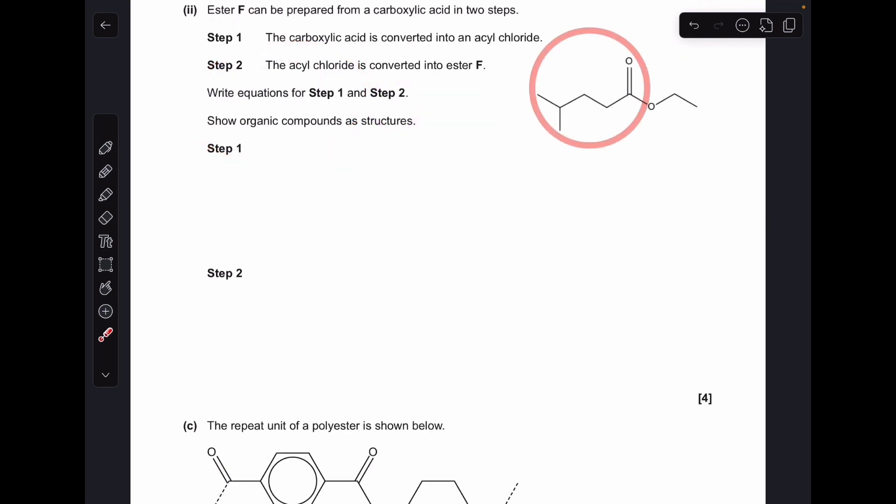Moving on to the next part. We've got to synthesize ester F by these two steps. I've highlighted this part here because the carboxylic acid is going to give us that. So the carboxylic acid in question is this one here. We react that with SOCl2, thionyl chloride, to generate the acyl chloride. And the rest of the equation looks like that there. And then to convert that into ester F, we react the acyl chloride with ethanol to get that ethyl group. So the other product is going to be an HCl molecule.